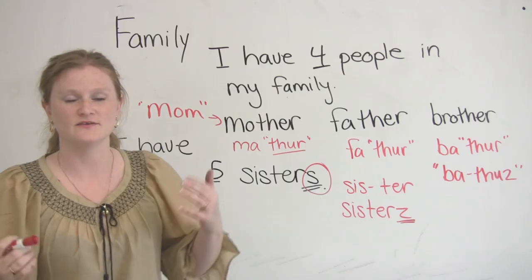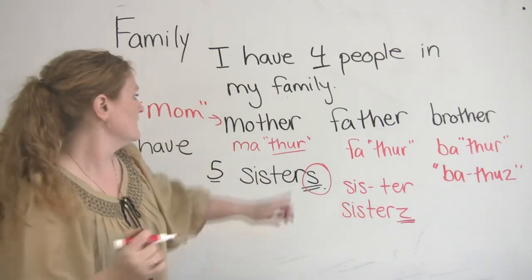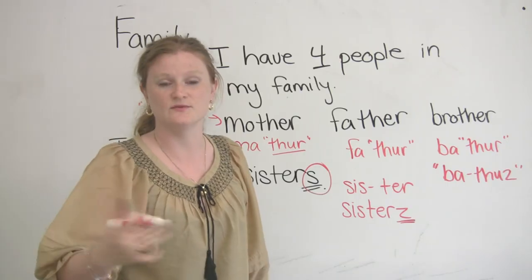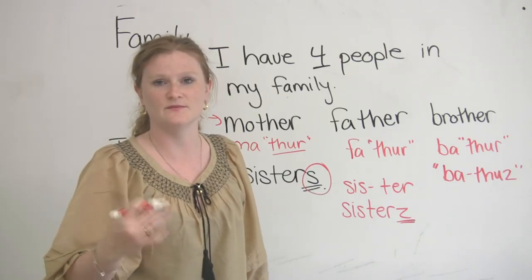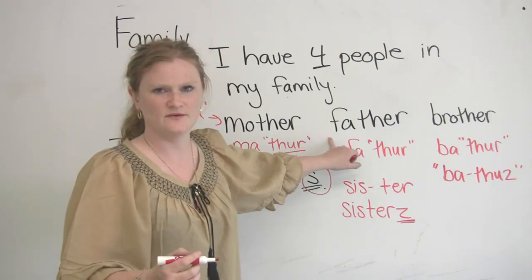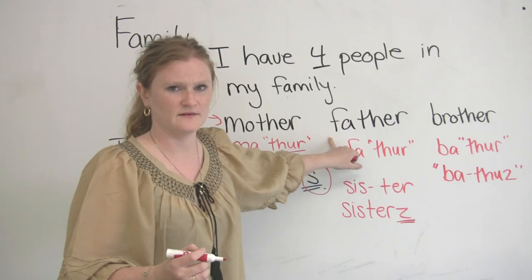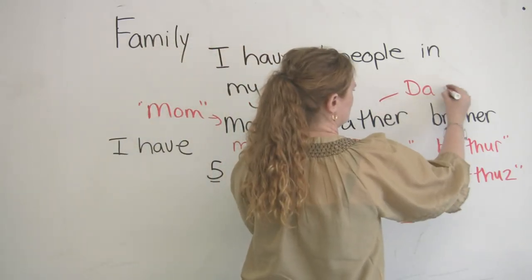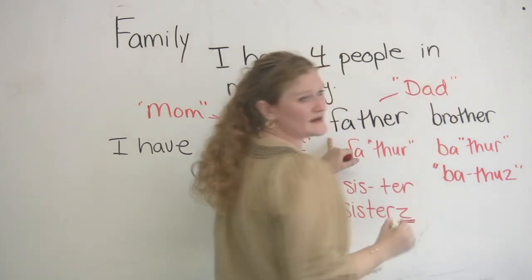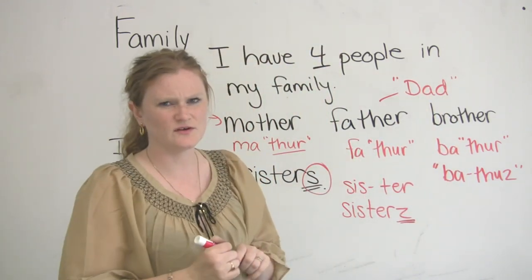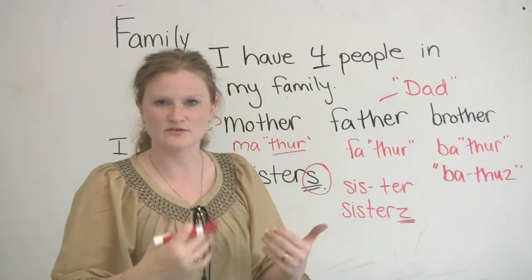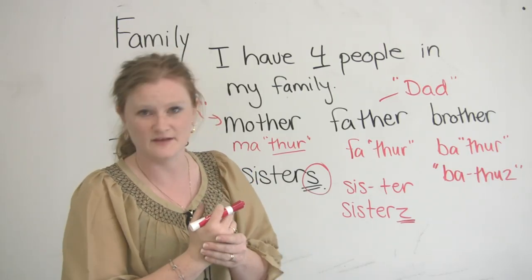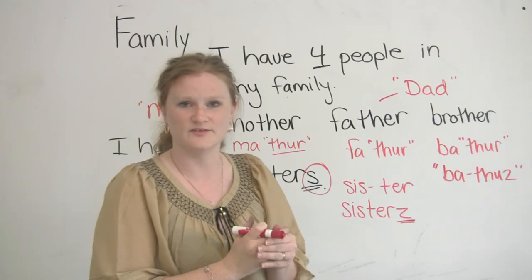And I refer to her as mom. For father, we never say, I have a father — it's very, very strange when we speak about him casually. Does anyone know the word for father? We say, Dad. So just so you can sound more natural when you speak about your family, you're going to say, I have a mom and a dad, two brothers, one sister.